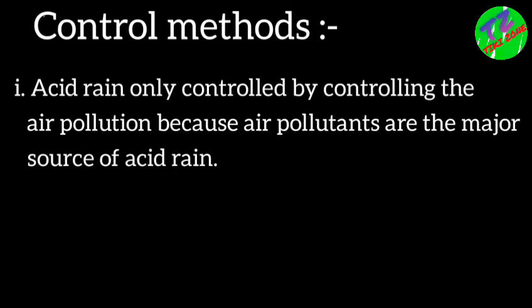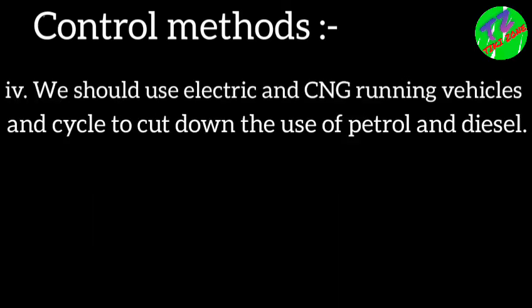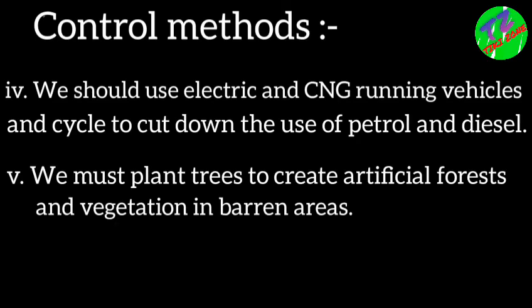Acid rain can only be controlled by controlling air pollution, since air pollutants are the major source of acid rain. We must stop or minimize the use of fossil fuels in kitchens and vehicles. In kitchens, fuel should be replaced by LPG. In vehicles, we should use electric and CNG vehicles and cycles to reduce the use of petrol and diesel. We must also plant trees to create forests and vegetation in barren areas.